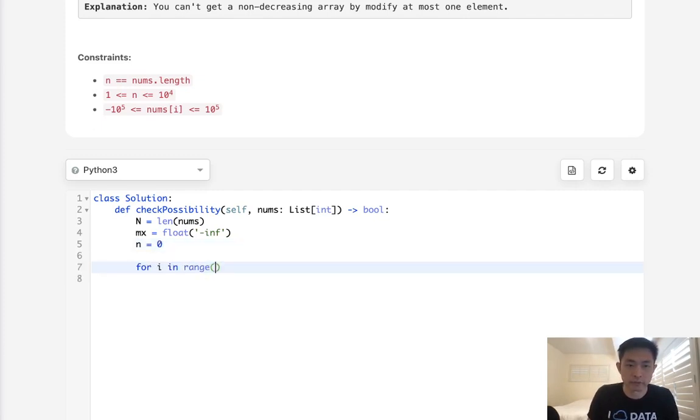For i in range of n, let's check to see if nums[i] is less than our max so far. We are going to increase our counter. And we'll set our max again every single time. Say max of max and nums[i]. And at the very end, we want to see if this num is less than or equal to 1.